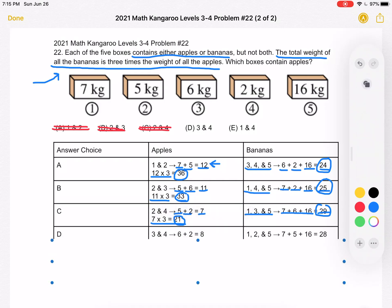Now let's look at D. In answer choice D, we have that boxes 3 and 4 contain apples. That would be 6 plus 2 for a total of 8 apples. The remaining 3 boxes, 1, 2, and 5 would contain bananas. That's 7 plus 5 plus 16, which is 28. The number of apples times 3 would be 24, but we have 28 bananas. So those two numbers are not equal. 24 is not equal to 28, so answer choice D is incorrect.